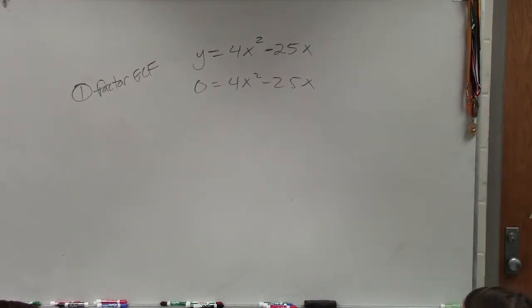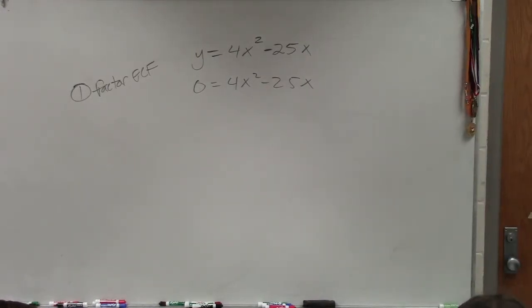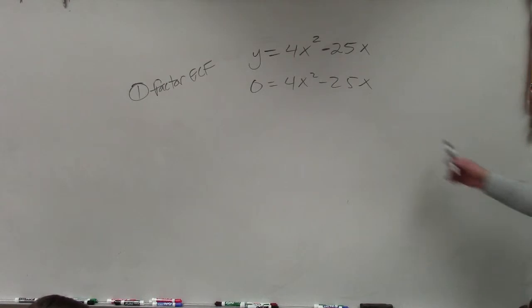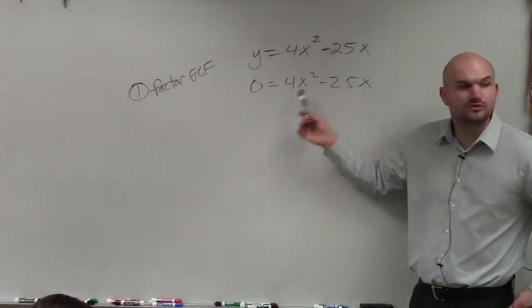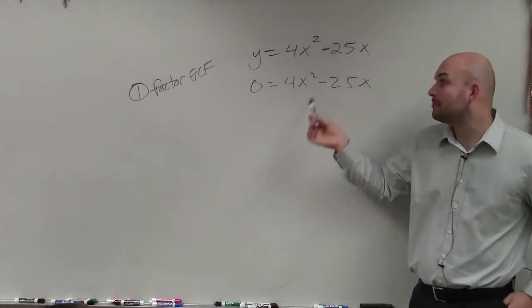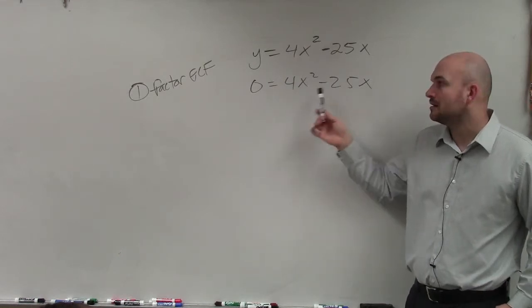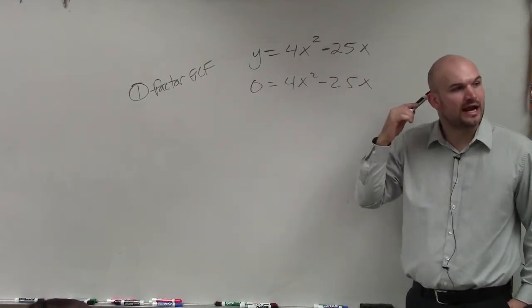So when looking into factoring your GCF, the GCF represents your greatest common factor, all right? So what we want to do is look at and see, what do these two terms, terms are separated by addition and subtraction, what do these two terms have in common? What do they share?